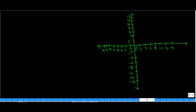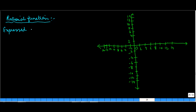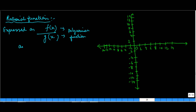In this video we are going to look at rational functions. Do you remember what a rational number is? A rational number is a number which is expressed in the form p upon q, where q is not equal to zero. So a rational function is a function which is expressed as f(x) upon g(x), where both of these are polynomial functions and g(x) is not equal to zero.